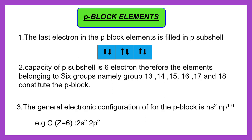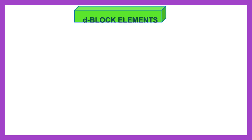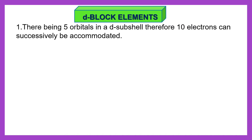Now see the next block, that is D block elements. There are 5 orbitals in the d subshell; therefore 10 electrons can be successively accommodated.